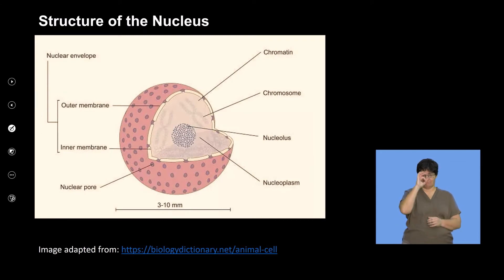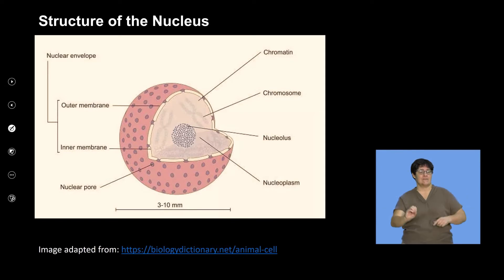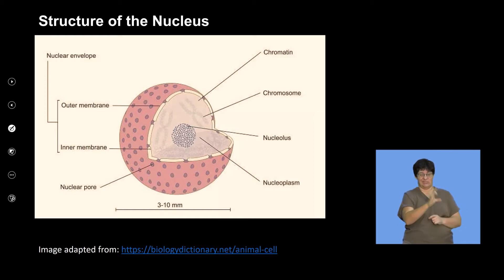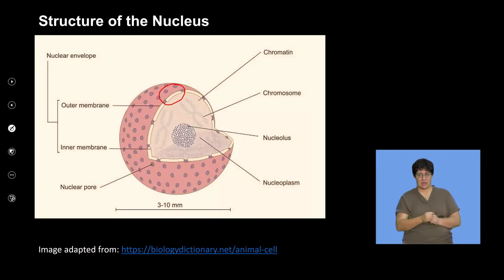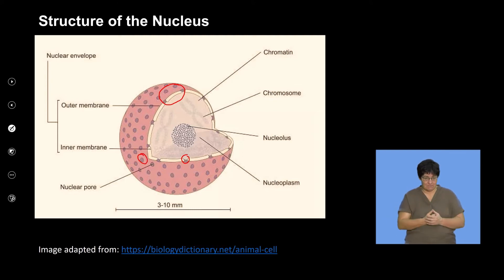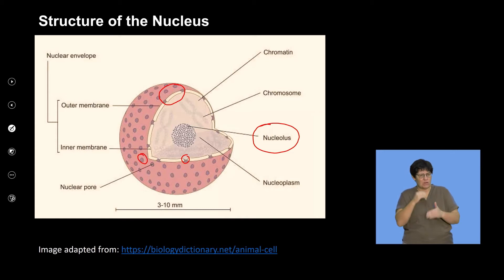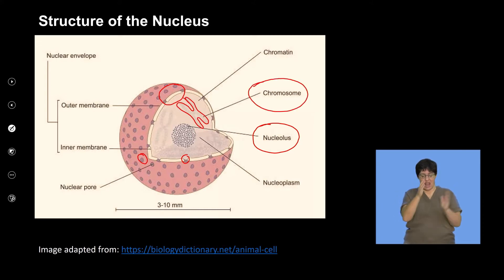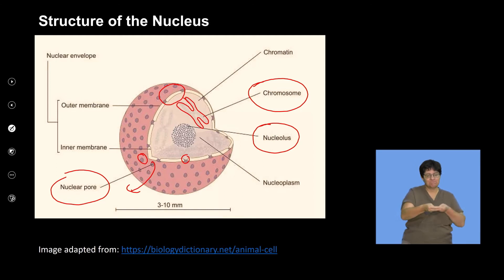Looking at the function and structure of the nucleus in detail, the size of the nucleus may vary, and because it's a significant organelle it takes up a large space in the cell. The nucleus is a double membrane structure containing nuclear pores, which allow movement of substances in and out. Central to the nucleus is the nucleolus, a structure that controls vital processes inside the nucleus. Chromosomes — the DNA arranged in a specific structure — are also visible. Nuclear pores play an important role in the exchange of substances in and out of the cell.